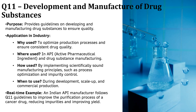Now let's talk about ICH Q11, Development and Manufacture of Drug Substance. This guideline ensures that drug substances are produced with high quality and consistency. A poorly manufactured drug substance can lead to impurities, variations in potency or even safety concerns. ICH Q11 helps pharmaceutical companies optimize their production process to ensure consistent drug quality every single time. For example, imagine an Indian API manufacturer working on a cancer drug. By following ICH Q11, they refine their purification process, reducing impurities and improving the drug's yield and effectiveness. ICH Q11 ensures the medicine remains safe, effective and consistent no matter where it is produced or how much demand grows.